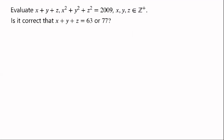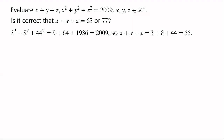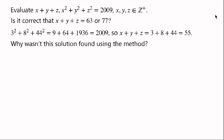But is it correct that x plus y plus z equals 63 or 77 only? Consider: 3 squared plus 8 squared plus 44 squared equals 2009. So x plus y plus z equals 3 plus 8 plus 44, which is 55. Clearly, there is another solution. Why wasn't this solution found using the method?